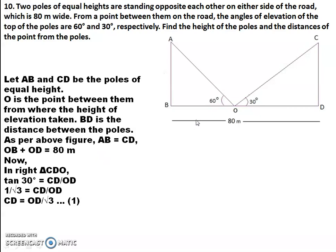Considering triangle CDO: tan 30° equals opposite side by adjacent side, which is CD by OD. The value of tan 30° is 1 by root 3. So we get CD equals OD by root 3. This is our first equation.